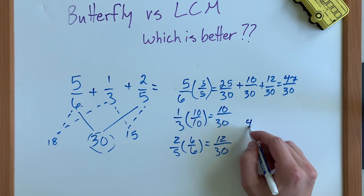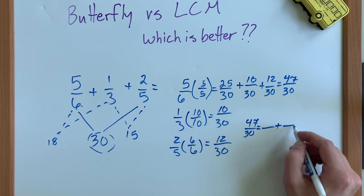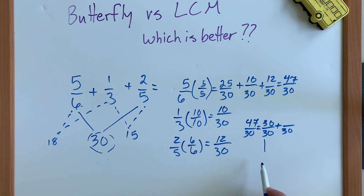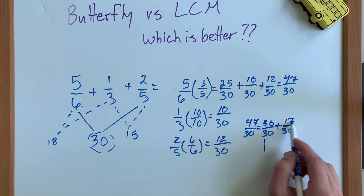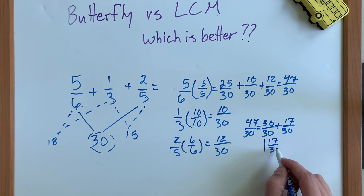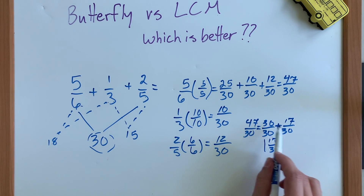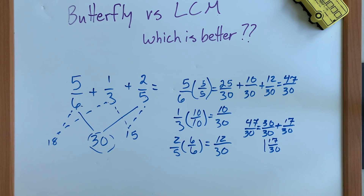Taking forty-seven over thirty and writing it as a mixed number: thirty over thirty is one, and thirty plus seventeen is forty-seven. So the answer is one and seventeen over thirty. Had you done this problem with the butterfly method, these numbers would have been much larger — all three times as big because your denominator would be three times as big. In this case, the LCM method works better.